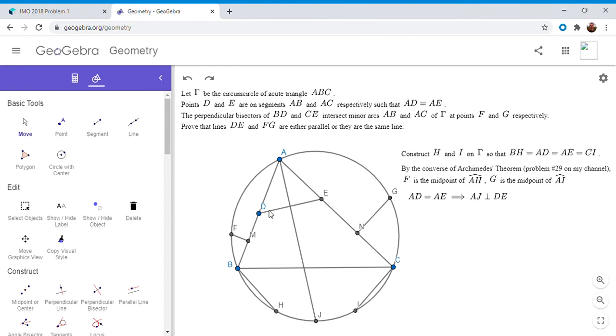Where do we go from here? We want to show that DE and FG are parallel. We've shown that DE is perpendicular to AJ. If we can show FG is also perpendicular to AJ, that would get us to where we want. I'm going to use a very similar approach to my last video. I'm going to draw in segment FG.